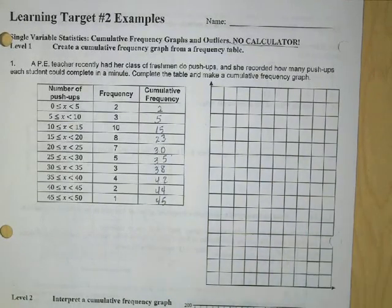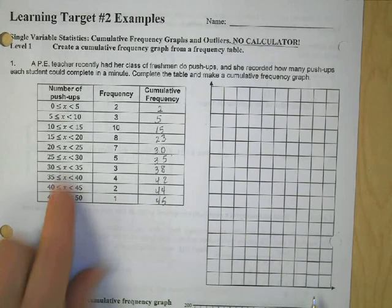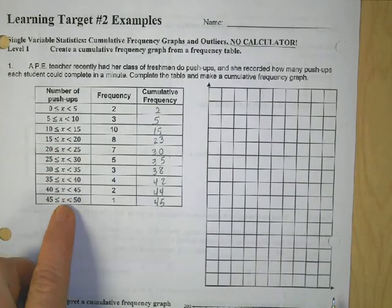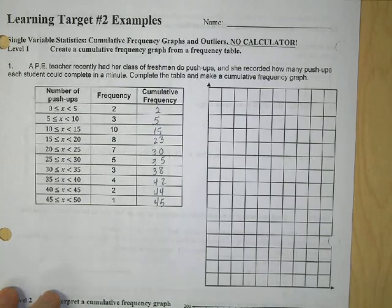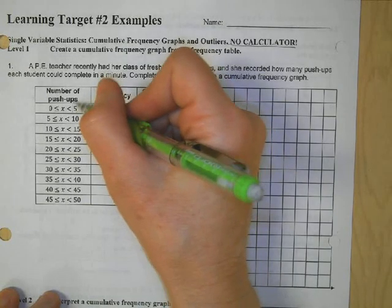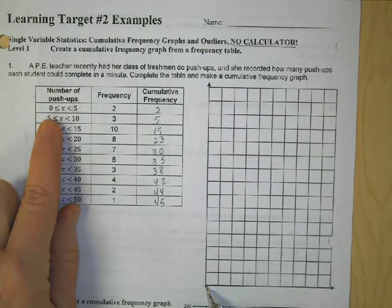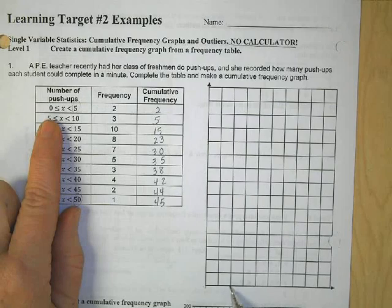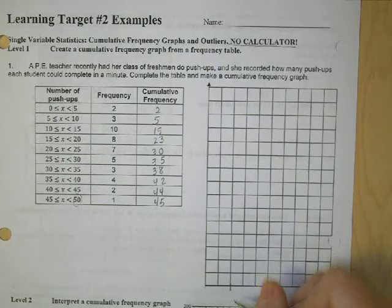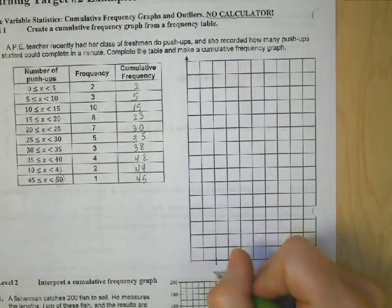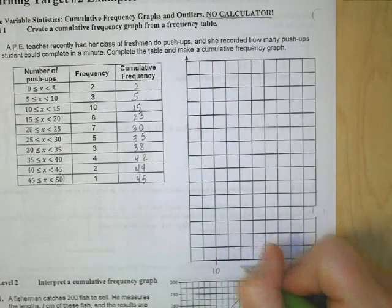Now we want to graph the data. Number of push-ups goes on the X-axis and we need to get all the way up to 50. The scale will be zero, ten, twenty, thirty, forty, fifty. Unfortunately I forgot my glasses today so I might make a bit of a mess, but here we go: ten, twenty, thirty, forty, fifty.